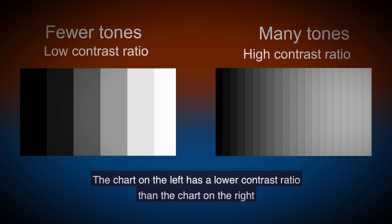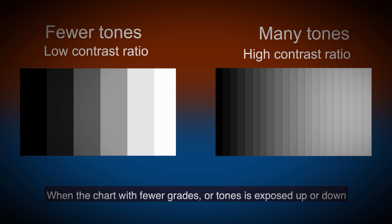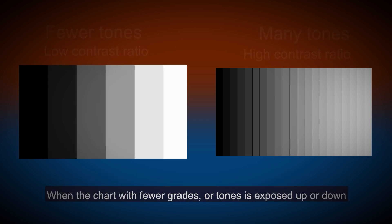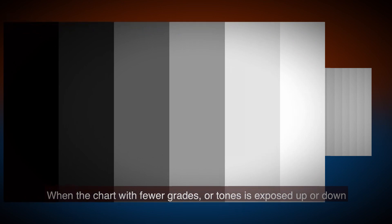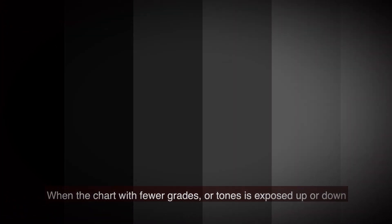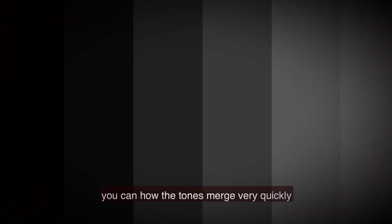The chart on the left has a lower contrast ratio than the chart on the right. When the chart with fewer grades or tones is exposed up or down, you can see how the tones merge very quickly.